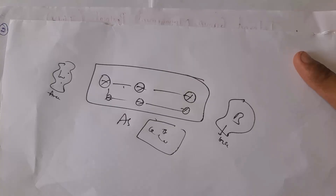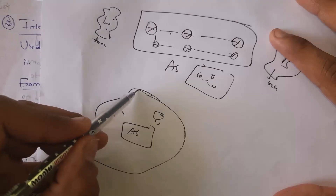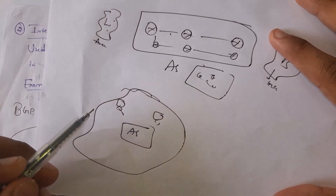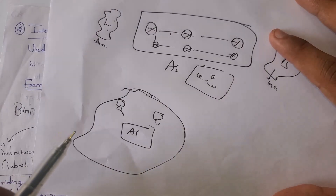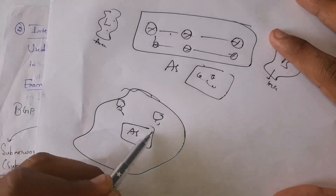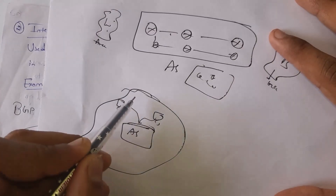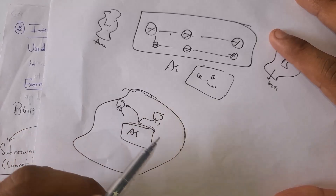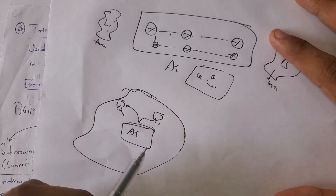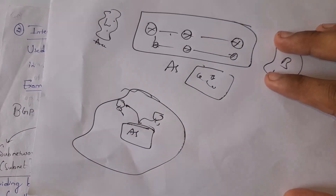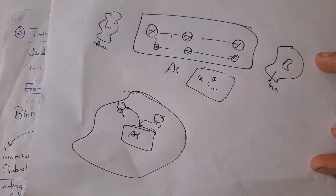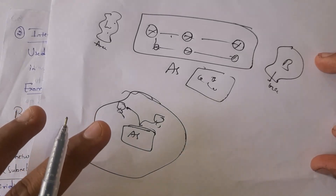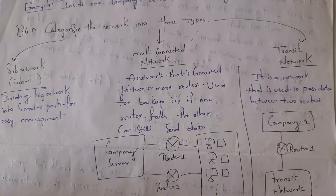In internal BGP, devices can communicate to each other within the organization. For example, in a software company there is an autonomous system, and within that organization all devices communicate to each other through that autonomous system. In internal BGP, communication happens within the organization and all devices and routers are connected to the same autonomous system.